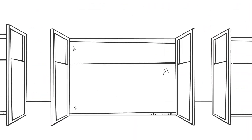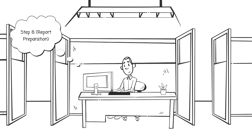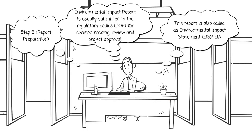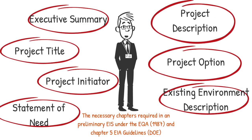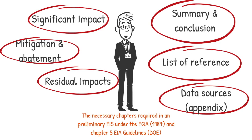Step 8 is report preparation. The environmental impact report is usually submitted to regulatory bodies such as the Department of Environment for decision making, review, and project approval. This report is also called an Environmental Impact Statement or Environmental Impact Assessment. The necessary chapters required under EQA 1987 and the Chapter 5 Environmental Impact Assessment Guidelines are: executive summary, project title, project initiative, statement of need, project description, project options, existing environment description, significant impacts, mitigation and abatement, residual impacts, summary and conclusion, list of references, and data sources or appendix.